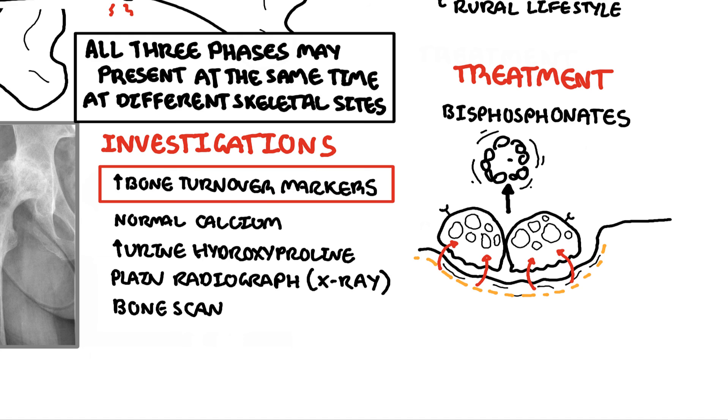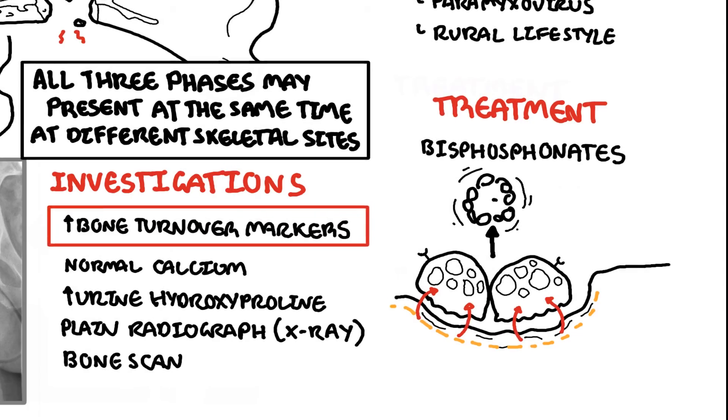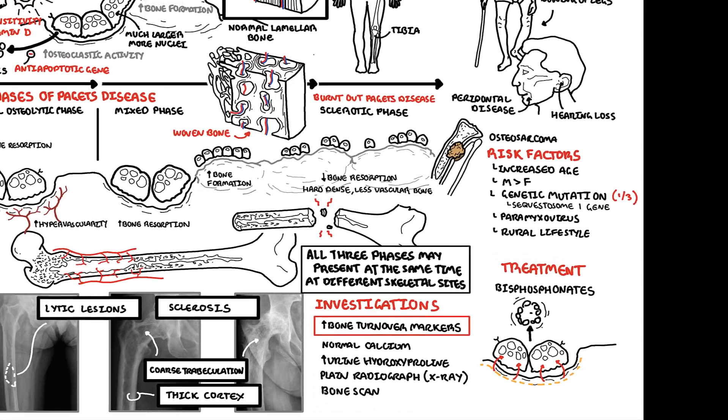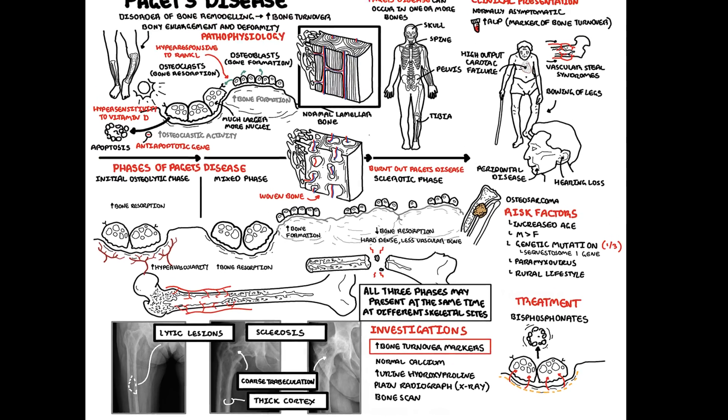Treatment also, importantly, consists of monitoring and managing the complications associated with Paget's disease. In summary, Paget's disease of the bone is a disorder of bone remodeling with an increase in bone turnover. It can be distinctly divided into three phases: osteolytic, mixed, and sclerotic. Treatment is bisphosphonates. Thank you for watching.